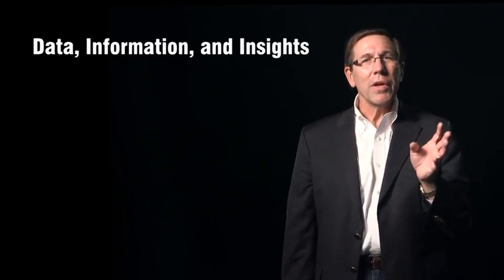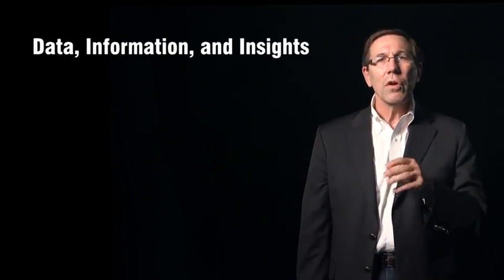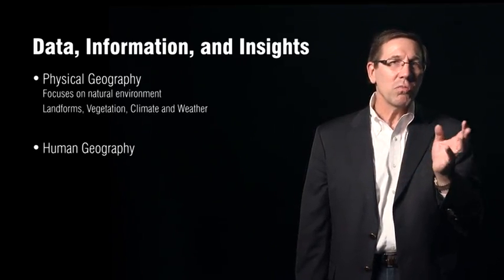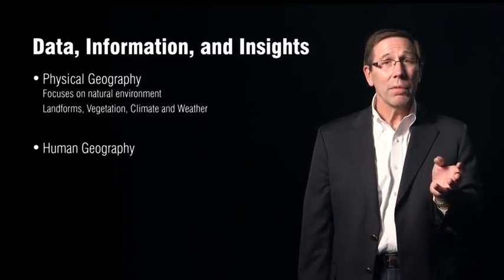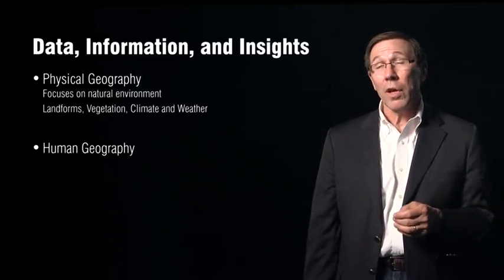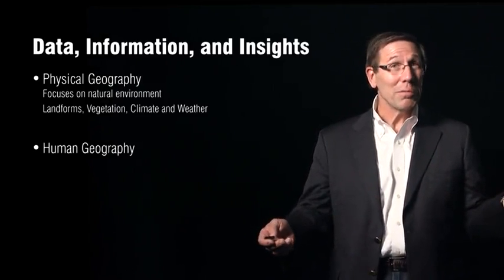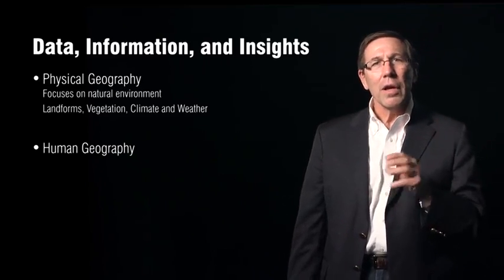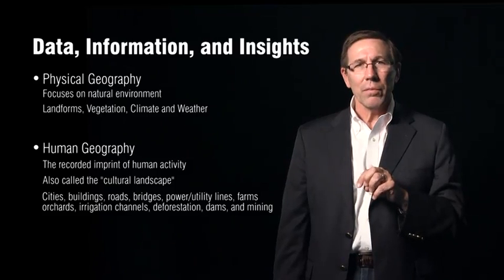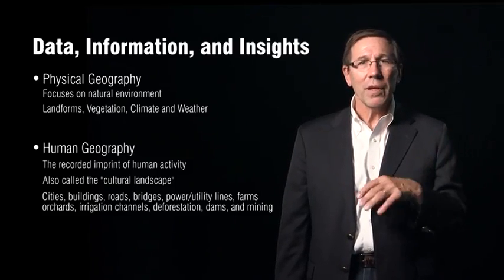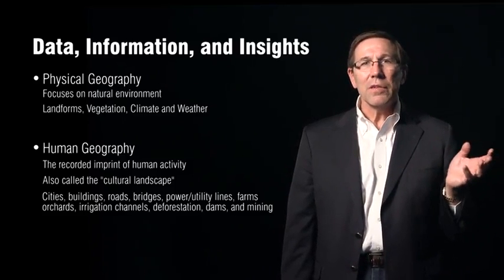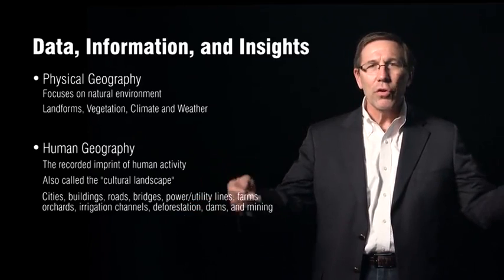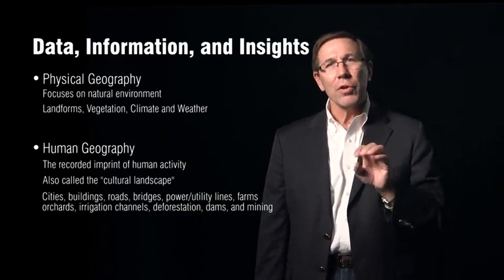GEOINT data can also be divided into two major categories: physical and human. Physical data focuses on entities such as landforms, vegetation, climate and weather — things we can touch and feel, things that adhere to the laws of nature. For example, water flows downhill and interacts with the landscape. Human geography is the recorded imprint of human activity on the Earth, sometimes called the cultural landscape. Examples include cities, buildings, roads, power lines, and utilities — anything the human puts on the surface of the Earth. Culture has a great impact on that.